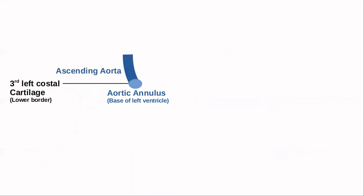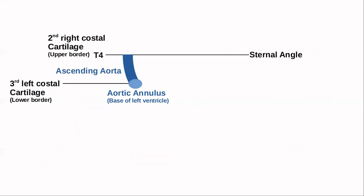This is the part from where the ascending aorta starts. The ascending aorta travels from the third left costal cartilage lower border up to the upper border of the second right costal cartilage. It travels from left to right, up to the level of T4 or the sternal angle.